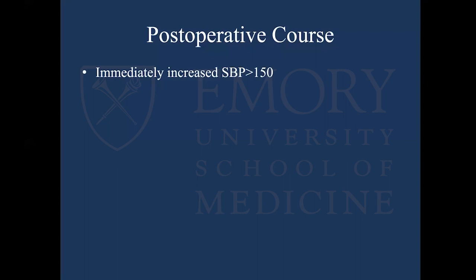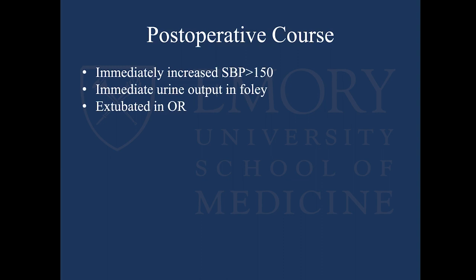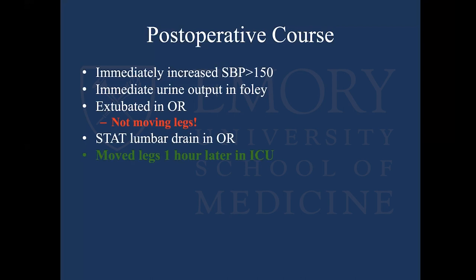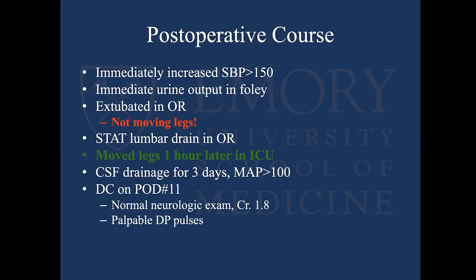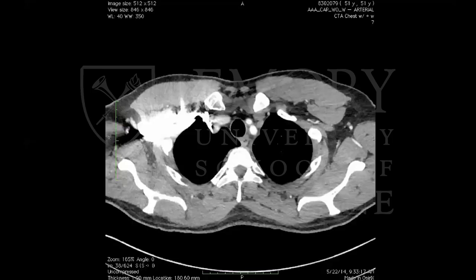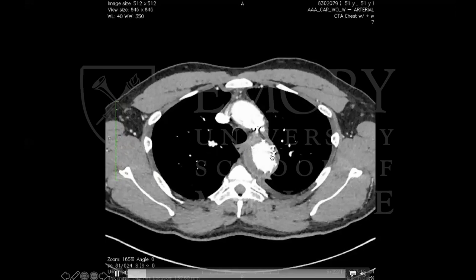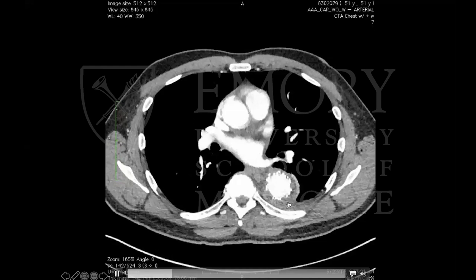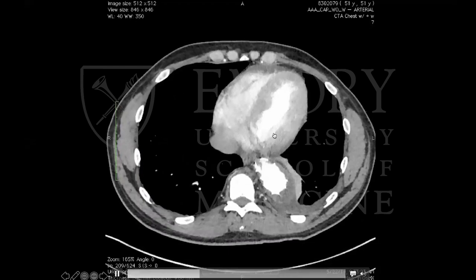We immediately started seeing urine in the Foley. We extubate all these patients in the OR if possible — I want to know their neuro exam, whether they can lift their legs. This guy wasn't moving his legs, so our cardiac anesthesiologist put in a stat lumbar drain in the OR. In one hour, the guy was moving his legs. We drained him for three days with blood pressure kept high. Eleven days later he walked out of the hospital with palpable pulses and a creatinine of 1.8. His one-month post-op CTA shows the true lumen expanded, false lumen largely thrombosed coming down, and you can't even tell there's a dissection.